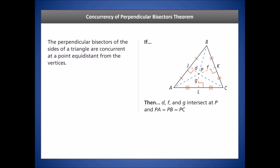Let's combine these ideas into the Concurrency of Perpendicular Bisectors Theorem. The theorem states: if you have a triangle and construct the perpendicular bisectors of its three sides, those bisectors will meet at a point of concurrency P, and the distances from P to each of the three vertices of the triangle will be congruent — the same distance.